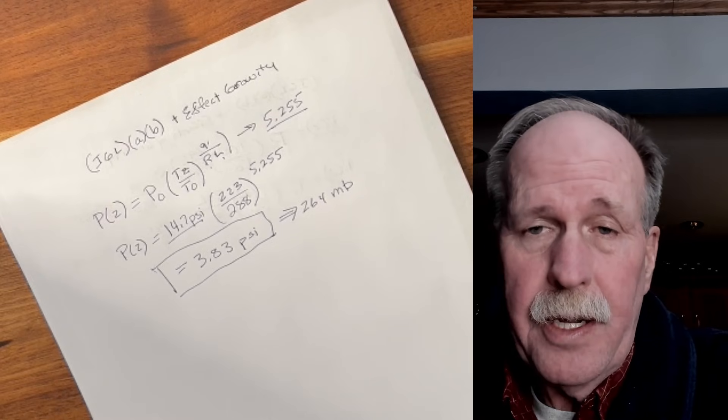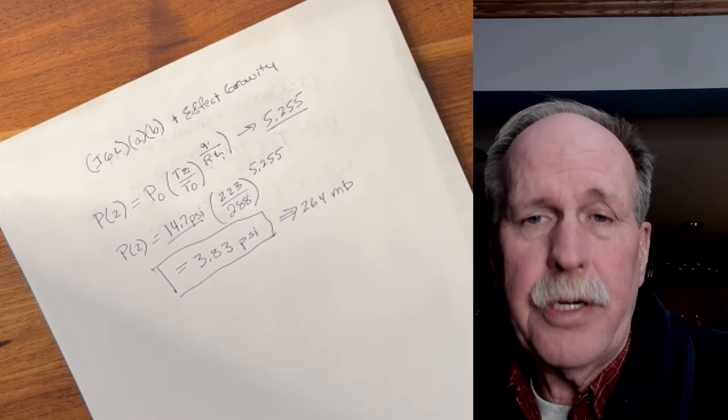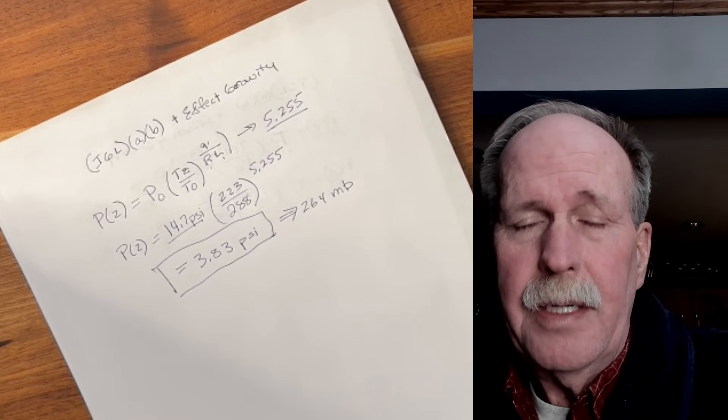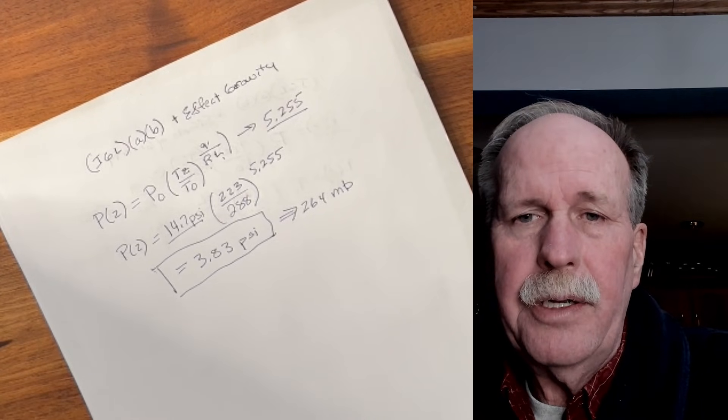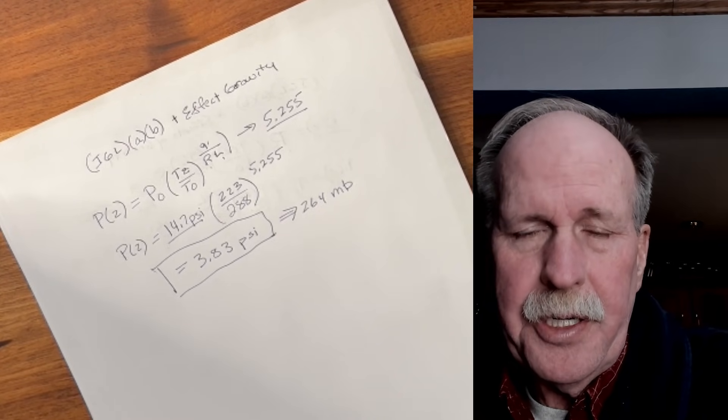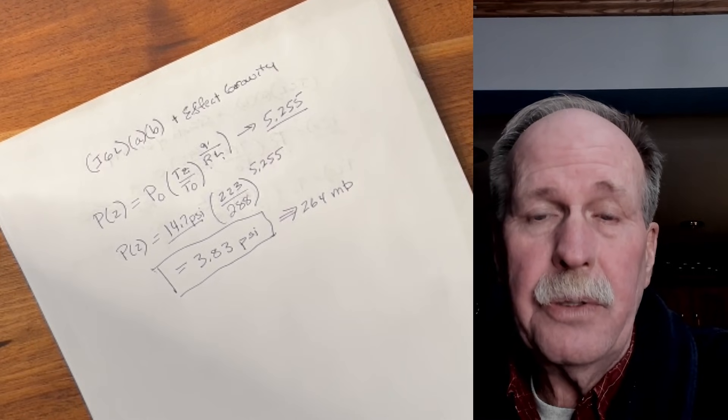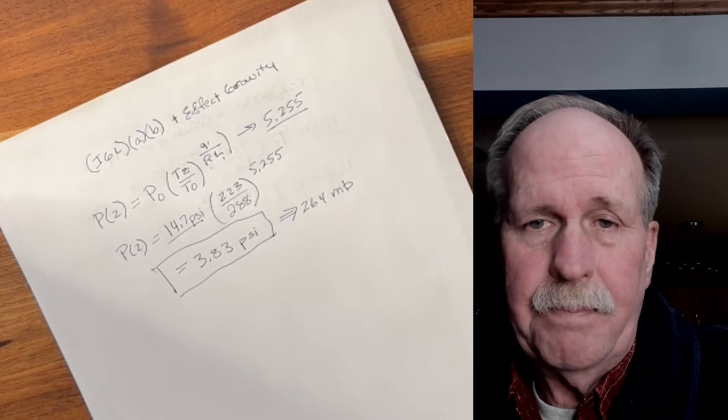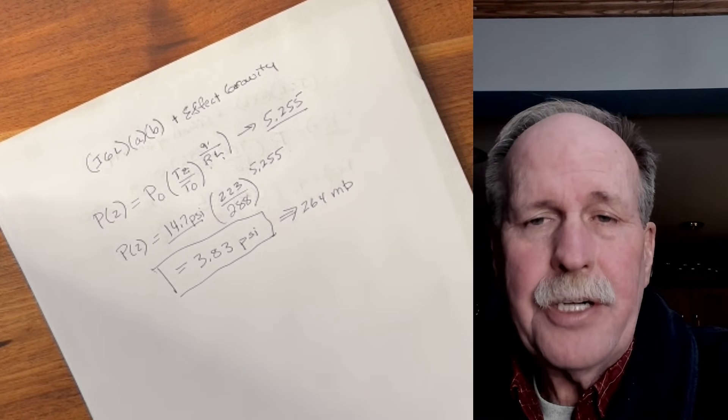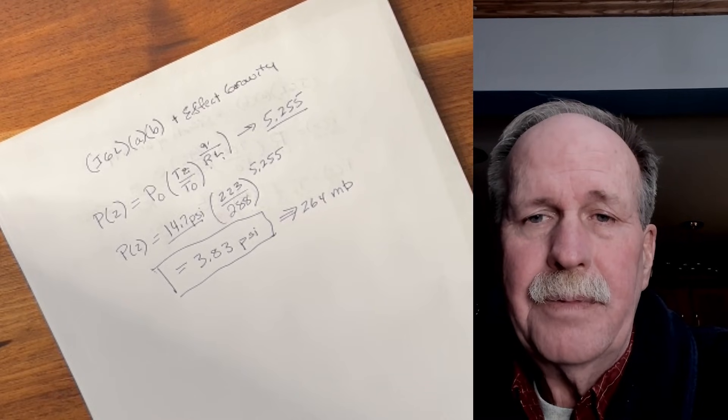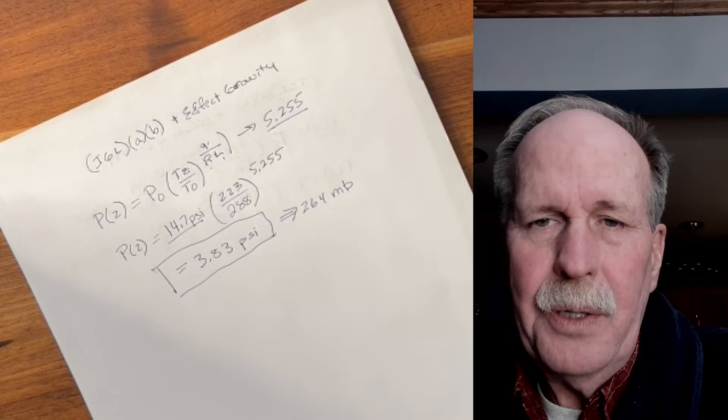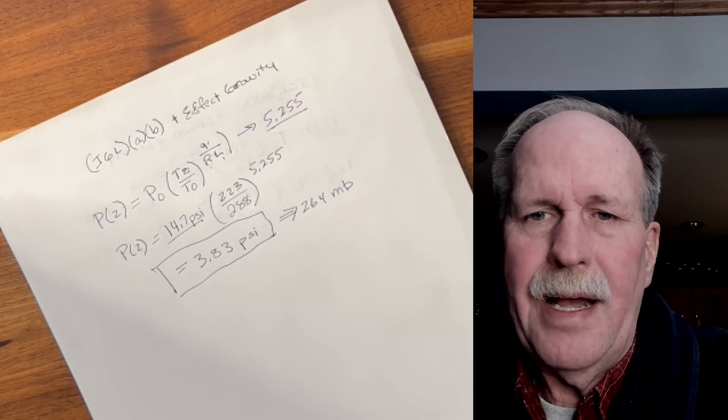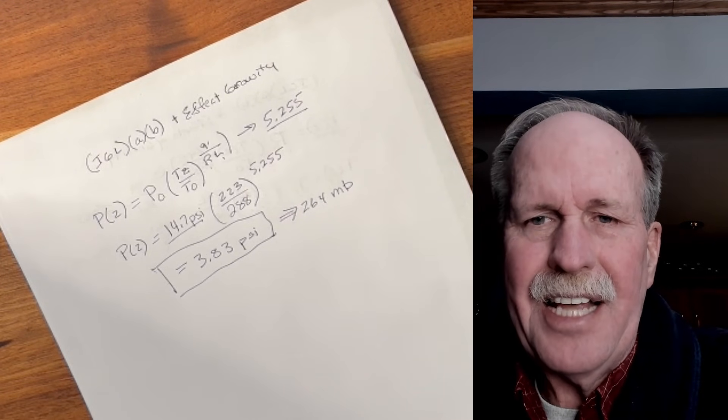So what's the take-home message from this? Number one, the Gay-Lussac's law does not account for the pressure gradient in the atmosphere. Number two, the only way that we can accurately calculate what the pressure will be at any particular altitude is to take into account the effects of gravity. And there you have it. The pressure gradient in Earth's atmosphere is dependent upon the gravity of Earth. You can't figure it out unless you take into account the effect of gravity. It's just as simple as that.